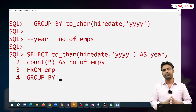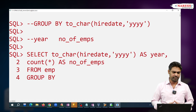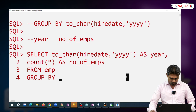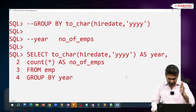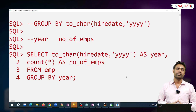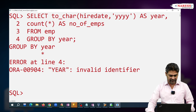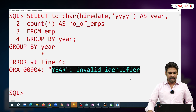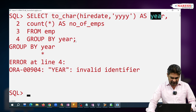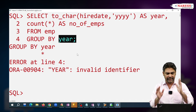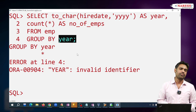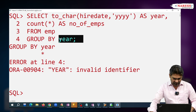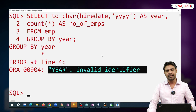I am using Oracle 21c here. I am trying to use the column alias 'year' in the GROUP BY. Observe — it is giving an error: 'Invalid Identifier'. So in Oracle 21c, we cannot use a column alias in the GROUP BY — it gives an 'Invalid Identifier' error.